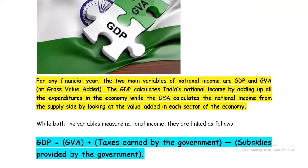While GVA calculates the national income from the supply side, by looking at the value added in each sector of the economy.